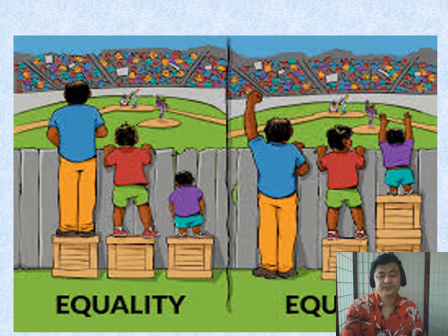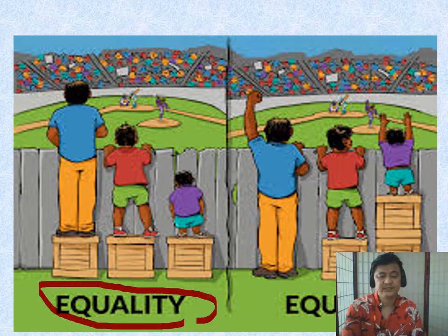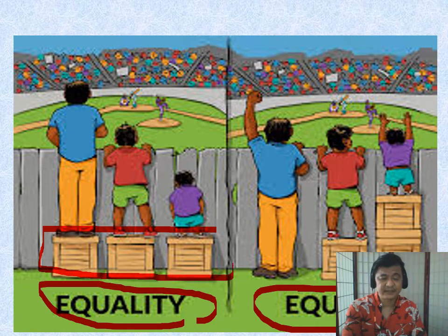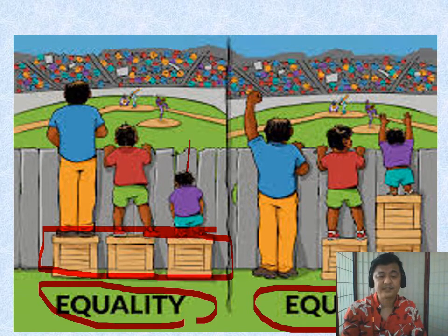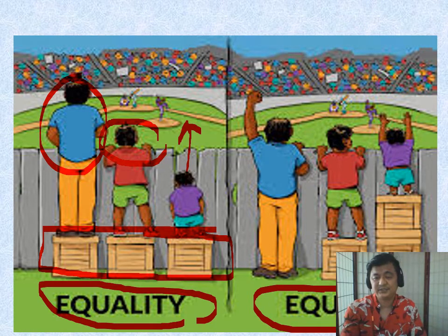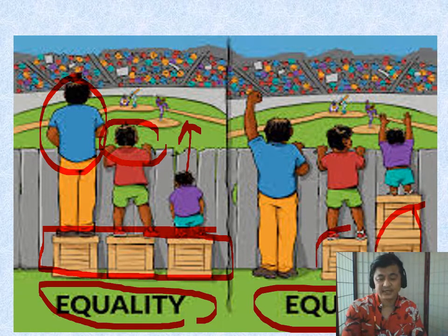This is a graphic illustration showing the difference between equality and equity. In the first drawing — that's equality — everyone receives the same support. But one person still can't see, while another gets more than enough. Equity adjusts to each person's situation: the shorter person gets two blocks, the medium gets one, the tallest needs none. That's equity — fairness based on individual need.